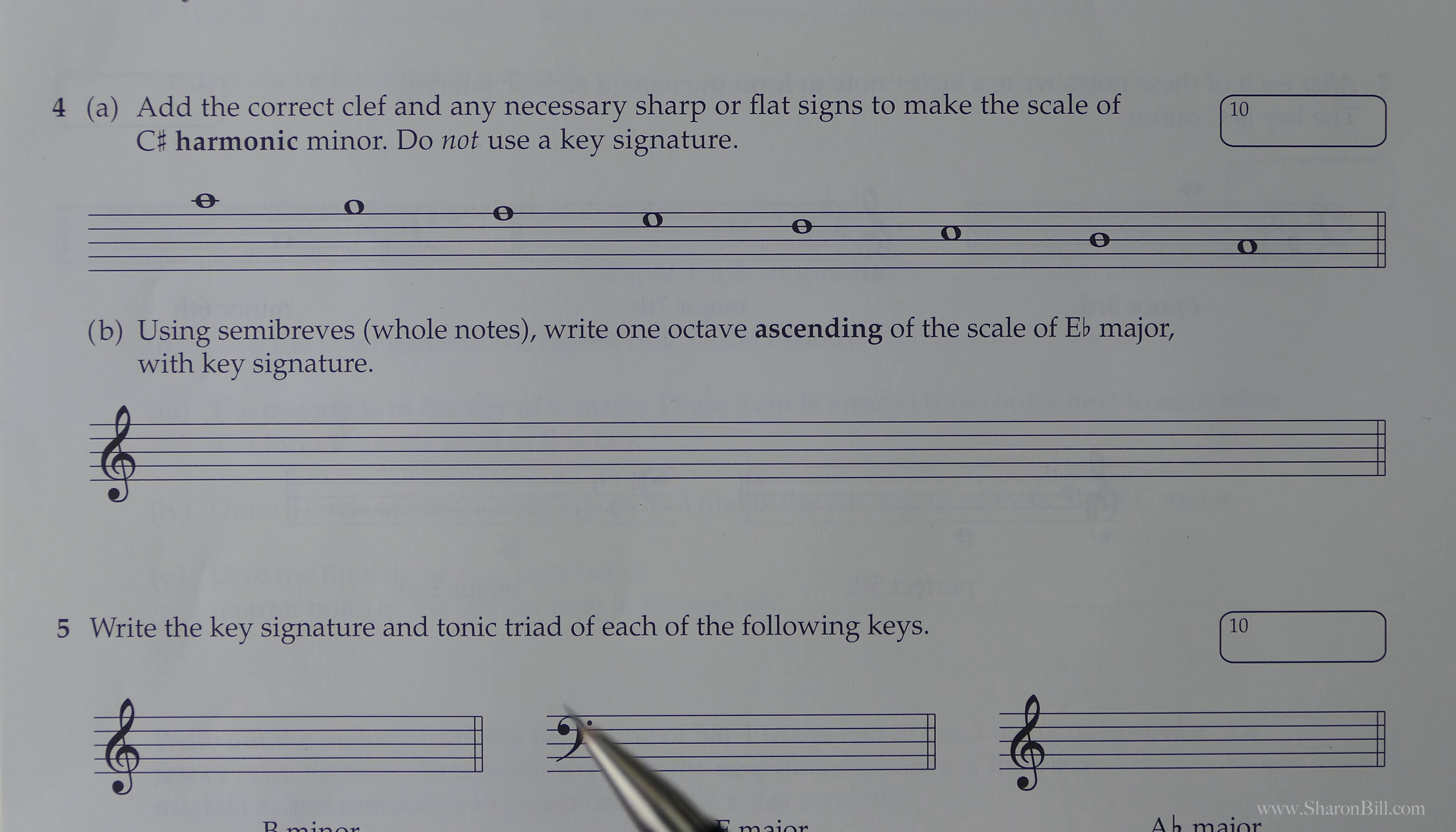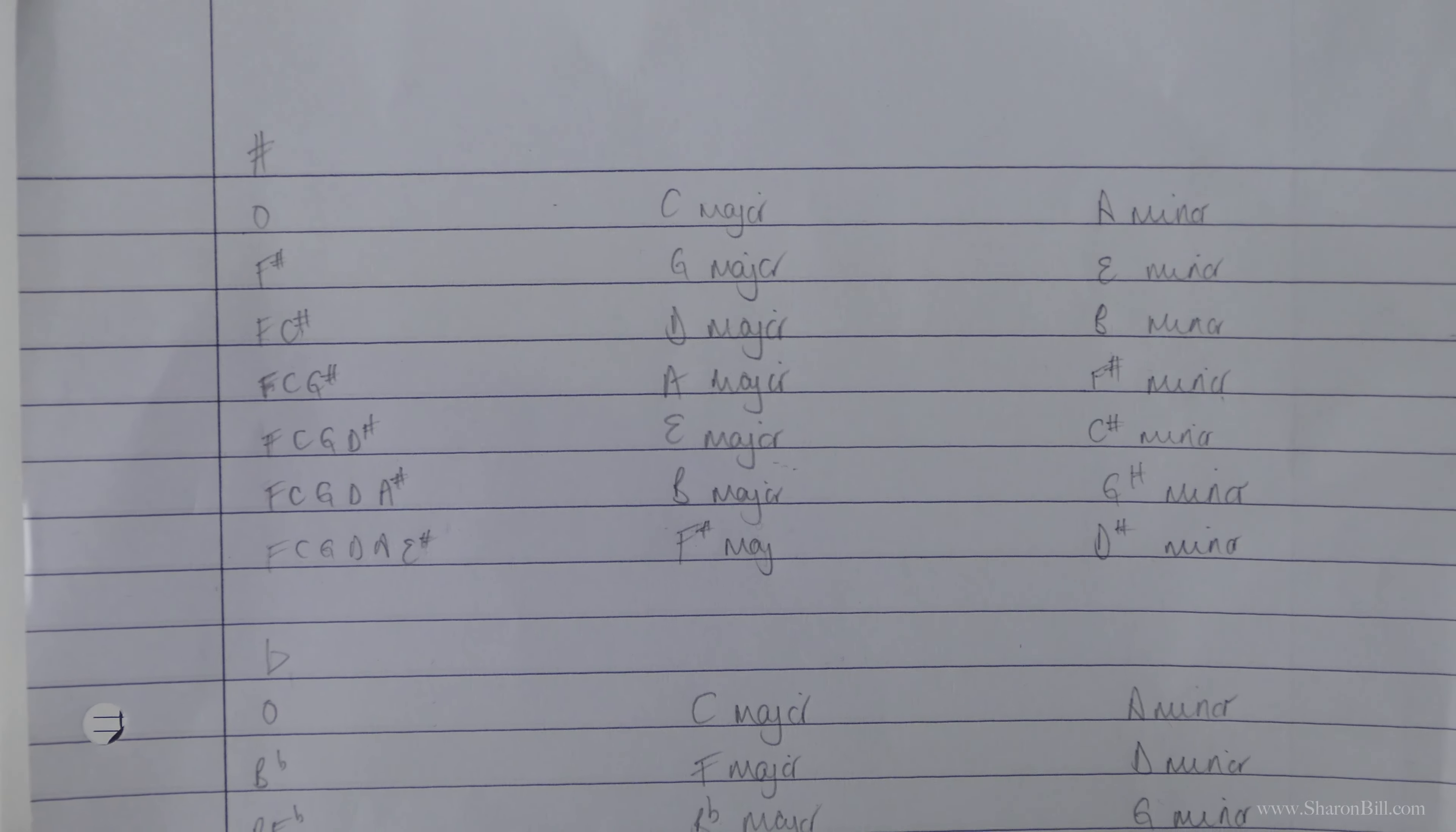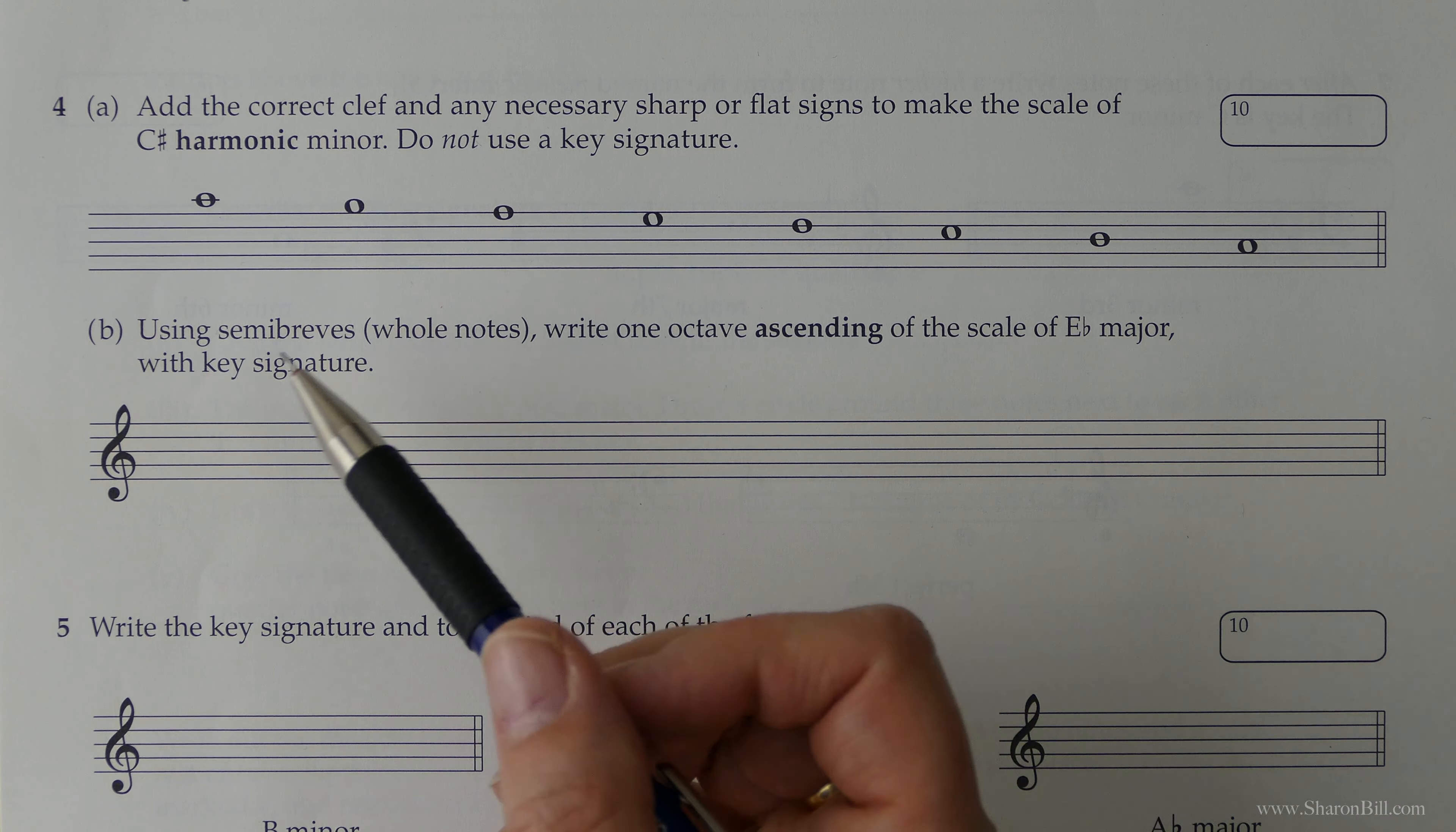So we're going to have a look at Question 4, which is addressing some scales. Now, I always find it helpful, before I start anything, to just quickly write out my circle of fifths, the list of scales in all the major and minor related keys. If you're not sure how to do that, I've done a video on how to work out the circle of fifths. And you'll find the link to that in the cards and in the description to help you to figure that out. And so if you've done that, you've done all of the thinking already. So let's have a look at this together.